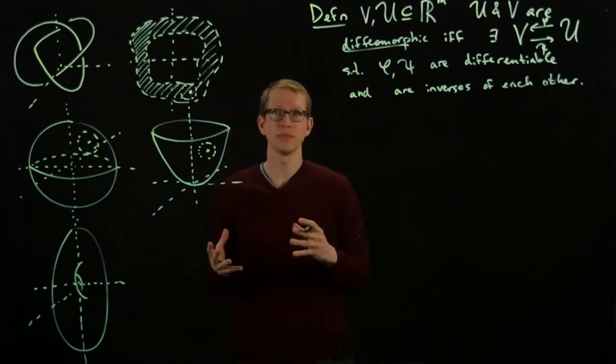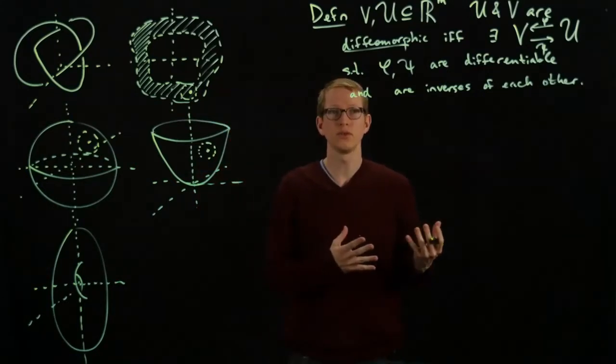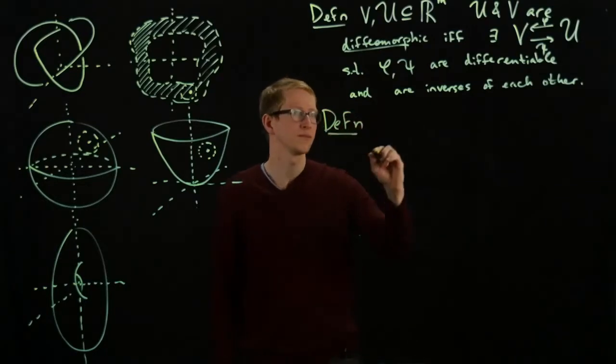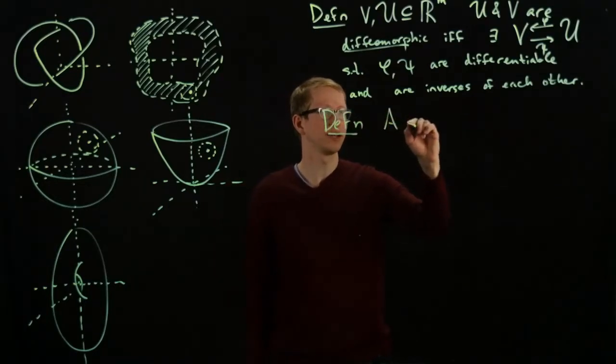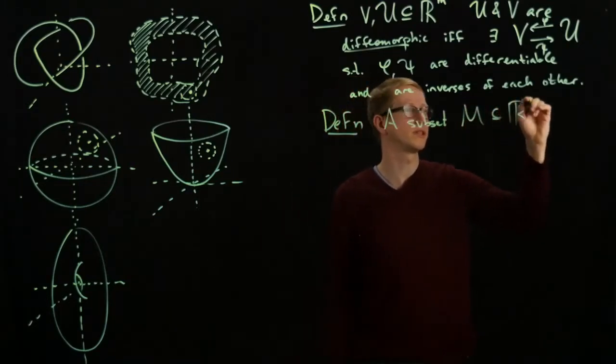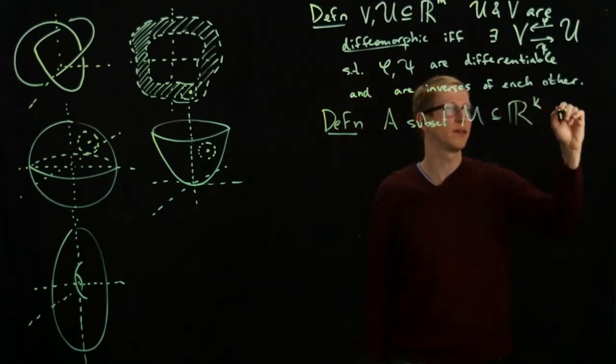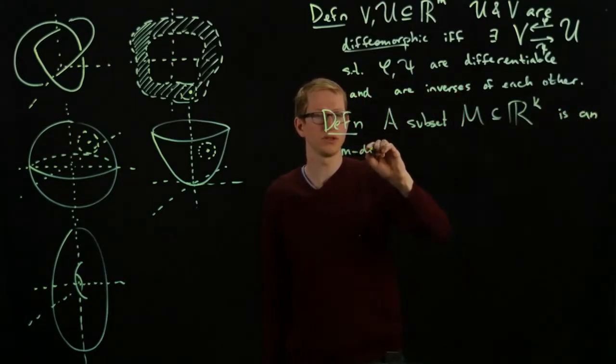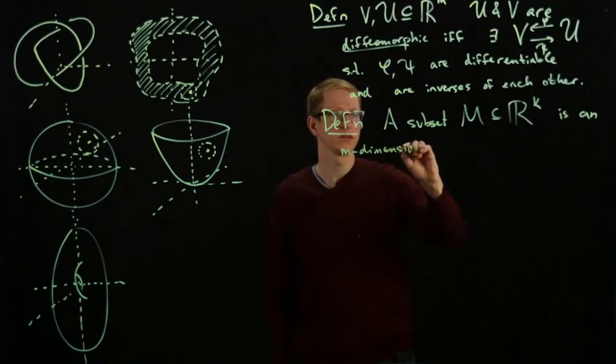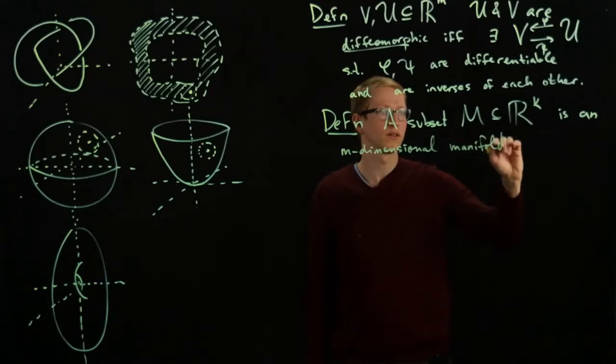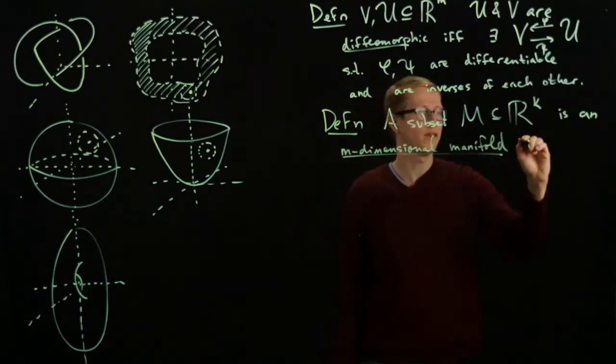So all of these examples lead to the following definition for what a manifold is. So a subset M in some Euclidean space, let's say RK, is an M-dimensional manifold if and only if,